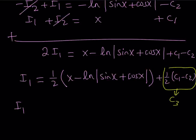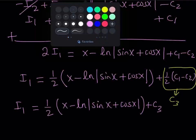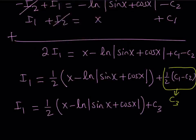So what I can do is I can just go ahead and call this a different constant like c3 or k or whatever you want and then from here I'm going to be getting my I1 as 1 half of the quantity x minus ln absolute value of sine x plus cosine x and then I'm going to be adding my c3 as my constant and this will bring us to the end of this video.